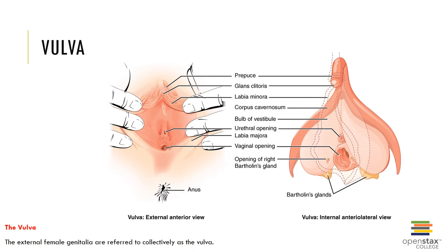The external female genitalia consists of the vulva, which includes the mons pubis — the rounded ridge over the pubic bone where pubic hair develops — the labia majora (hair-covered skin folds), the labia minora (inner hairless skin folds), the clitoris (a small protruding structure homologous to the penis with erectile tissue), the prepuce encircling the clitoris, vestibular glands homologous to the bulbourethral glands, and the perineum — soft tissue between the vaginal region and the anus, often cut during childbirth in a procedure called an episiotomy.